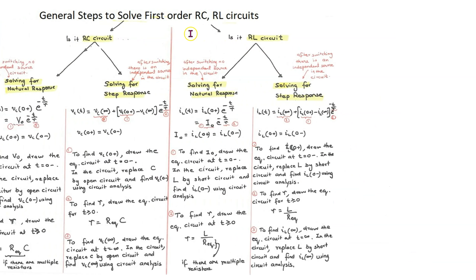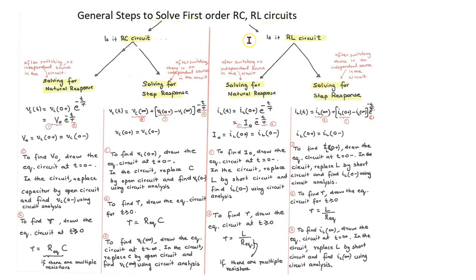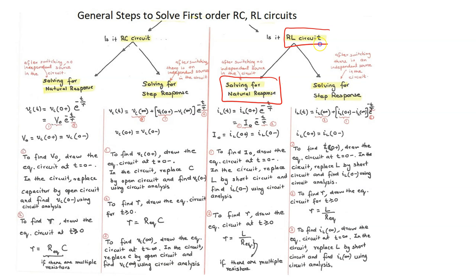The general steps to solve a first order RC or RL circuit are shown here. For an RL circuit, the first step is to decide whether we are solving for the natural response or the step response. Once this is decided, then we solve for the parameters that make up the natural or step response. In this particular example, we will see that we are solving for the natural response of an RL circuit.